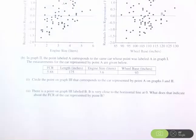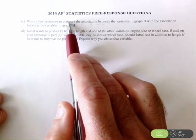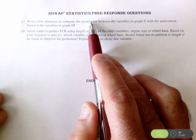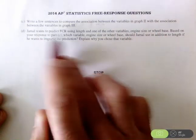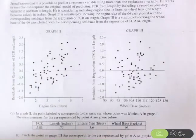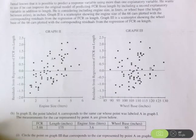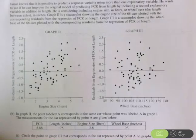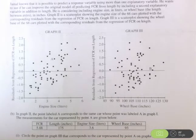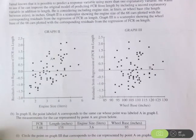Turning the page, we're ready for part C. Write a few sentences to compare — that's a very important word, so use comparison terms — the association between the variables in graph 2 with the association between the variables in graph 3. We're used to comparing distributions using shape, center, and spread, but this is not about that. When comparing scatter plots, we want to compare the direction, the form, and the strength, and we should be using comparison terms. Simply listing direction, form, and strength will not be enough for full credit.